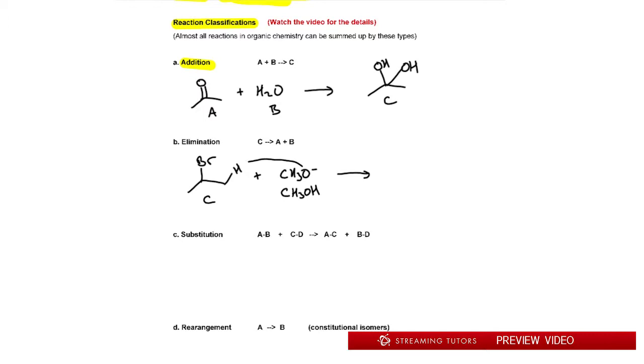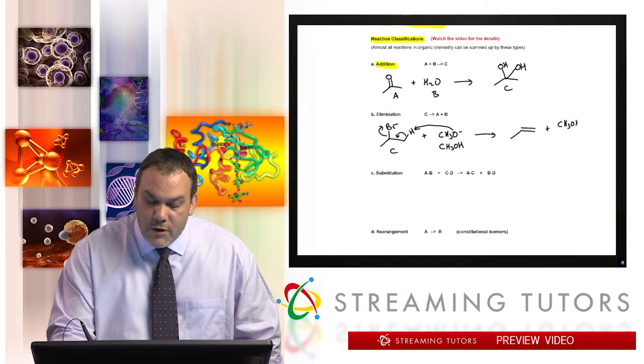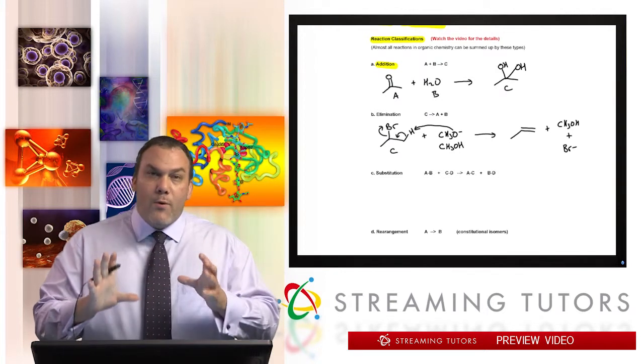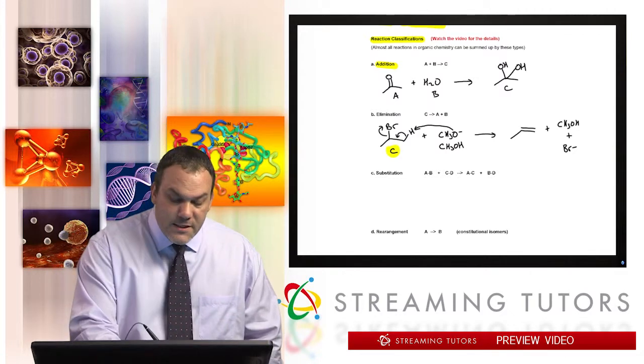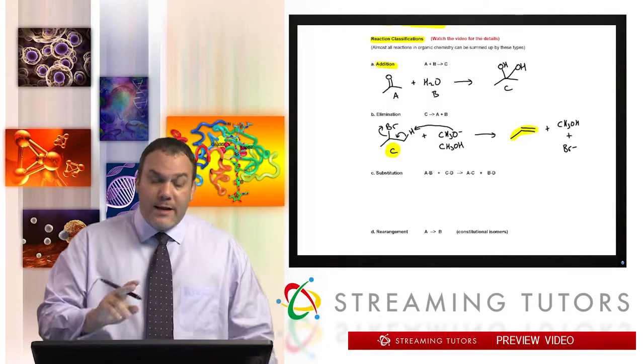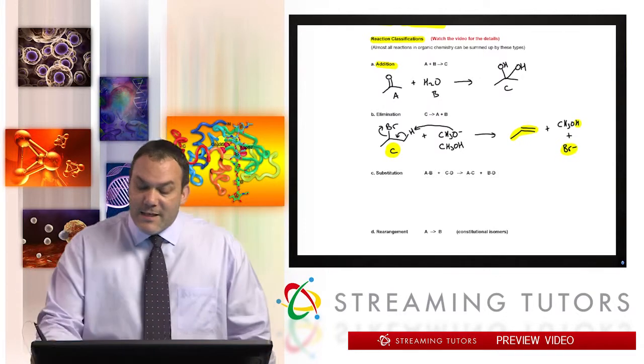The carbon is protonating this CH3O minus, then this can go here and make a double bond and the Br can leave. We've just eliminated from this molecule C an H and a Br, so we have that plus CH3OH plus Br minus. This is known as an elimination. We've made three different things by eliminating from that starting material a Br and an H.